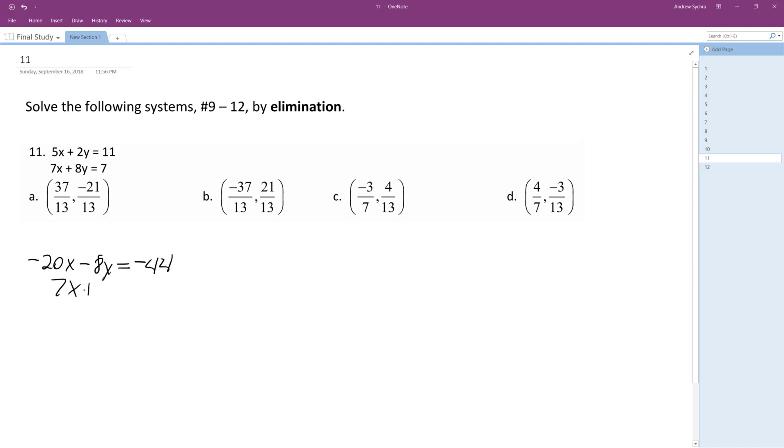On the bottom, 7x plus 8y equals 7. Add them together, the y's cancel out. We end up with negative 13x is equal to negative 44 plus 7, which is negative 37.